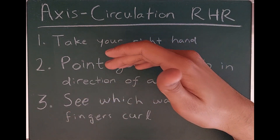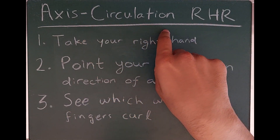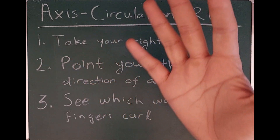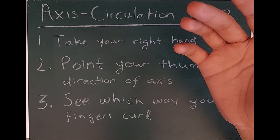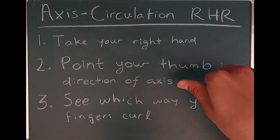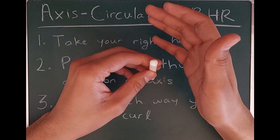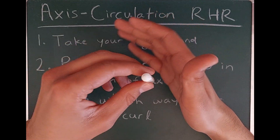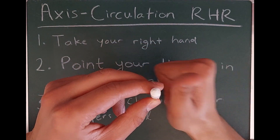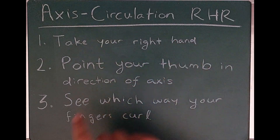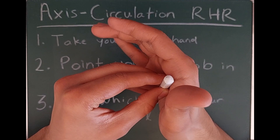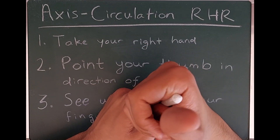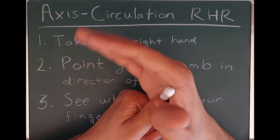For right-hand rule number two — or what I'll call the axis circulation right-hand rule — you take your right hand and point your thumb in the direction of whatever axis you're interested in. So if I'm interested in an axis coming out of the screen, I point my thumb out of the screen. Then I wrap my fingers around that axis — I'll use this piece of chalk as the axis — and look at which way my fingers curl. That direction is the direction of circulation.